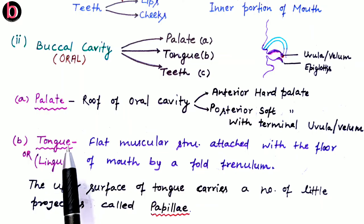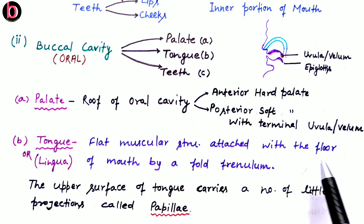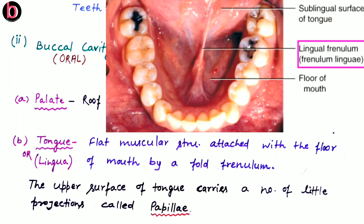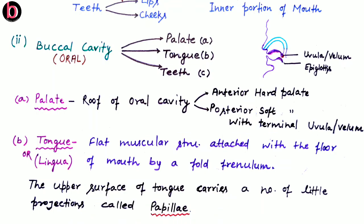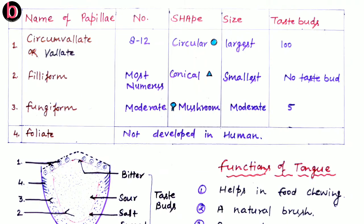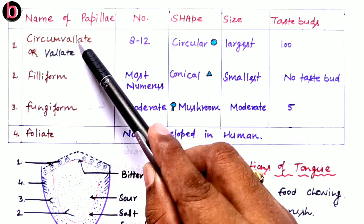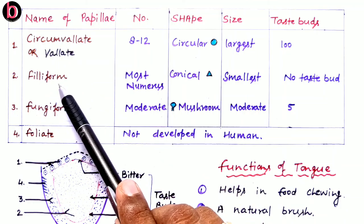The tongue, also known as the lingua, is a flat muscular structure attached to the floor of the mouth by a structure known as the frenulum. In the diagram you can see the frenulum located just below the tongue. On the upper surface of the tongue there are numerous minute projections called papillae. The papillae on the surface of the tongue are categorized into four types.